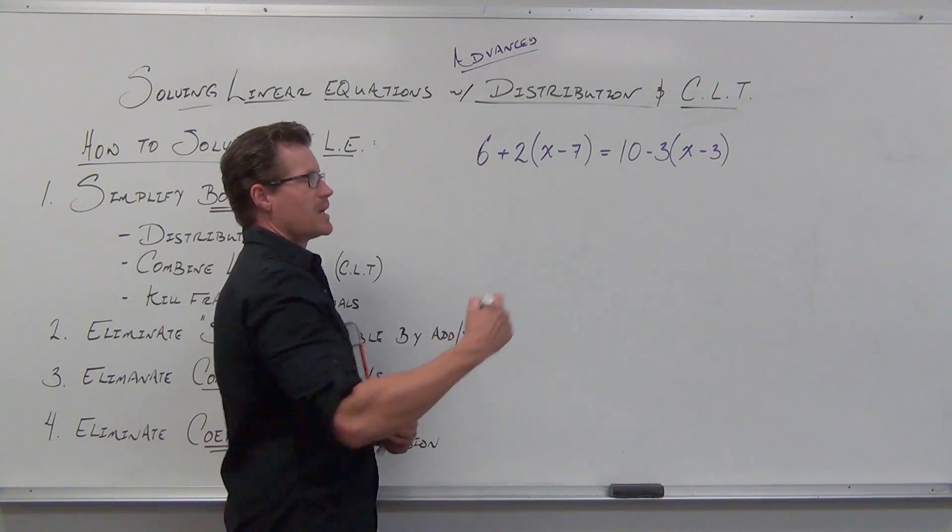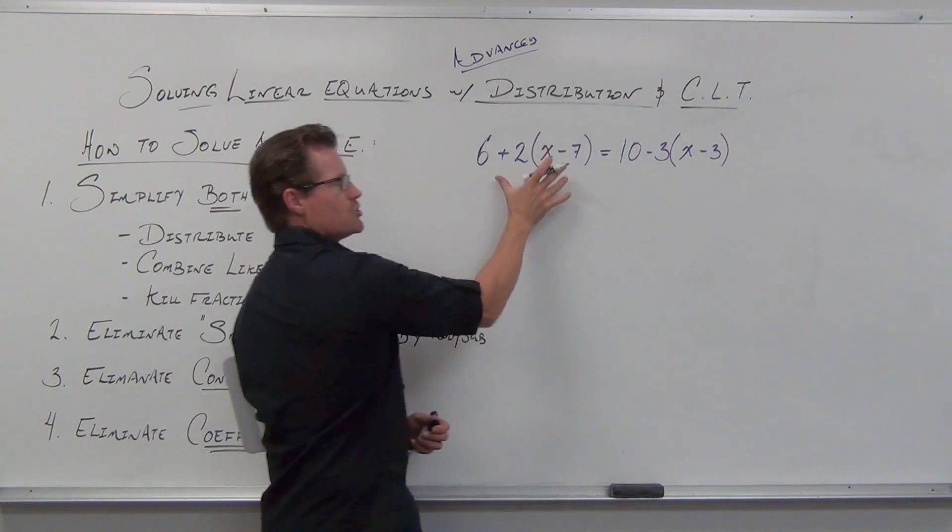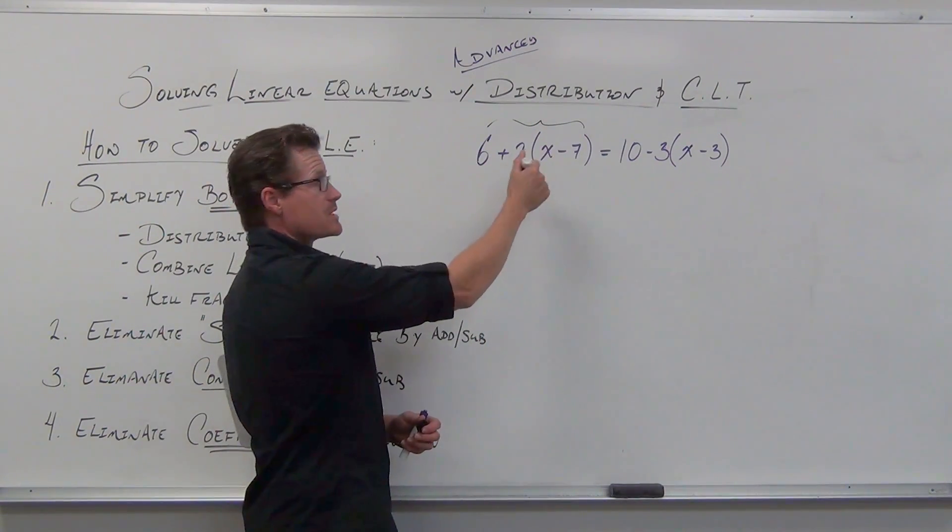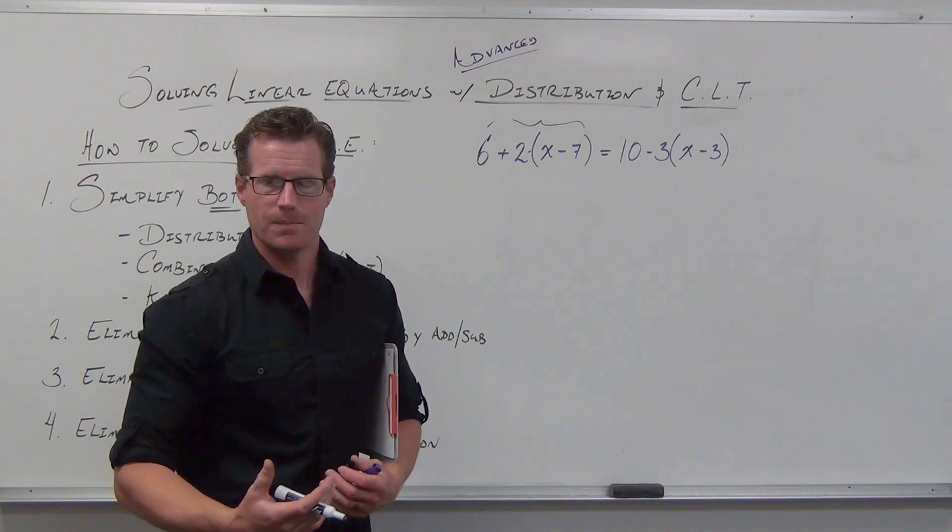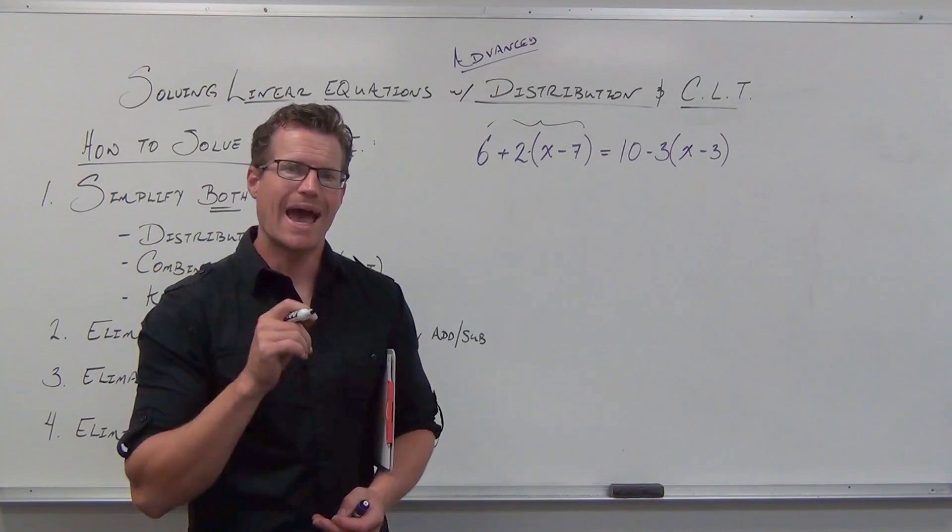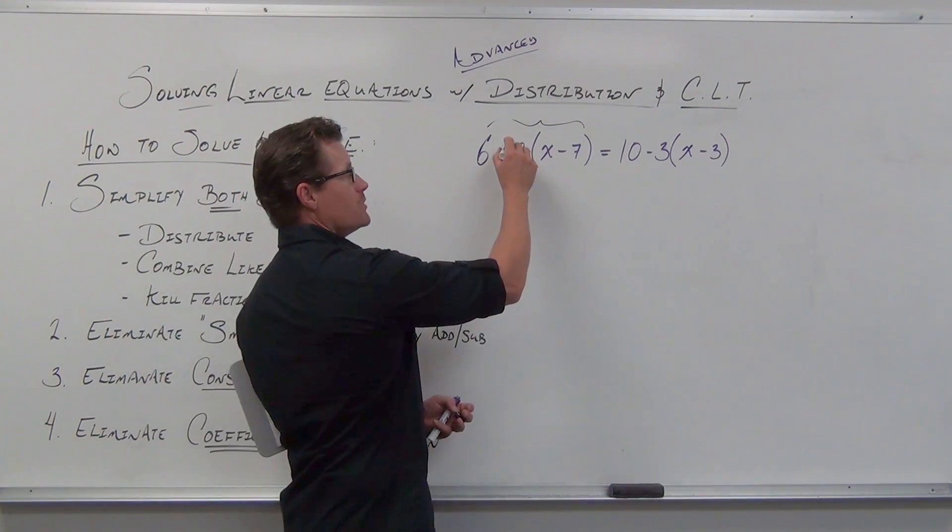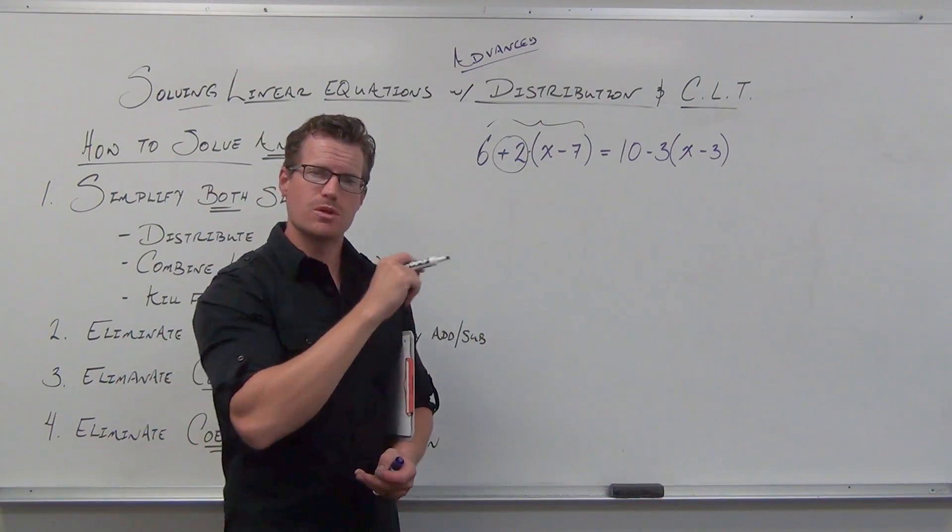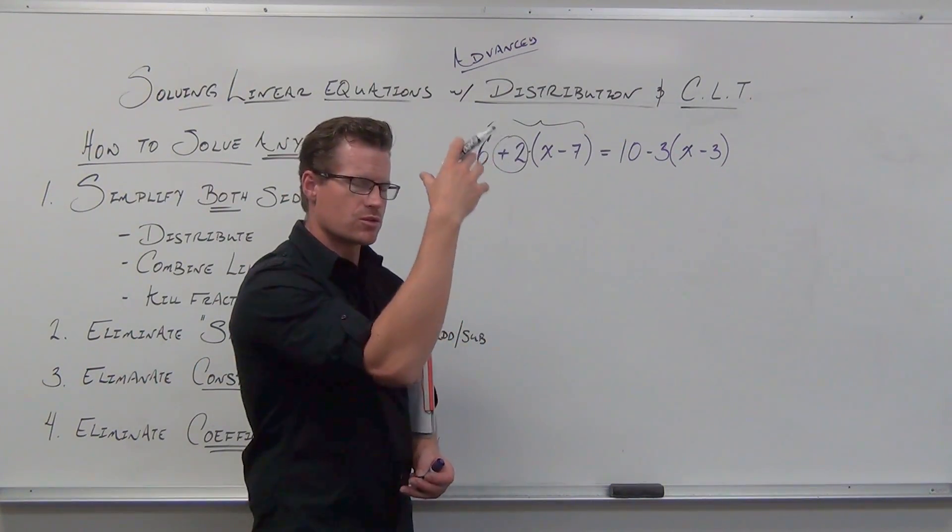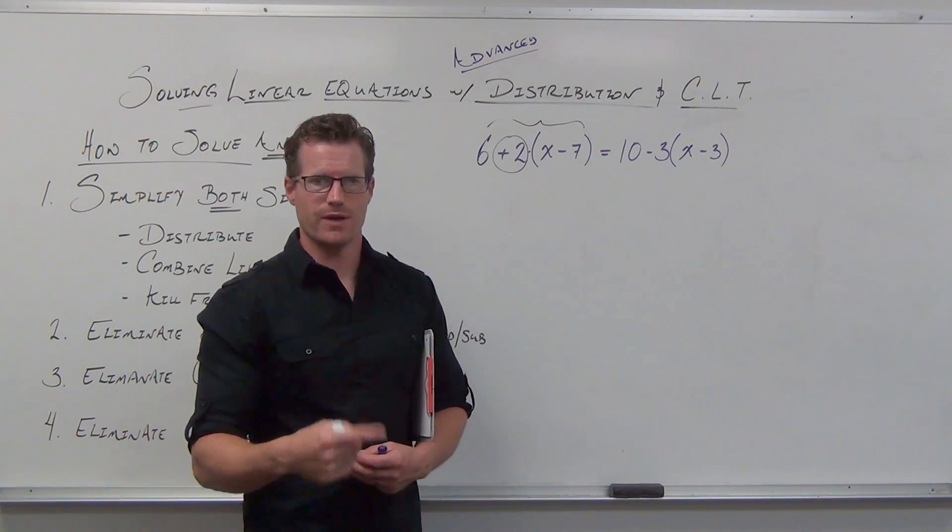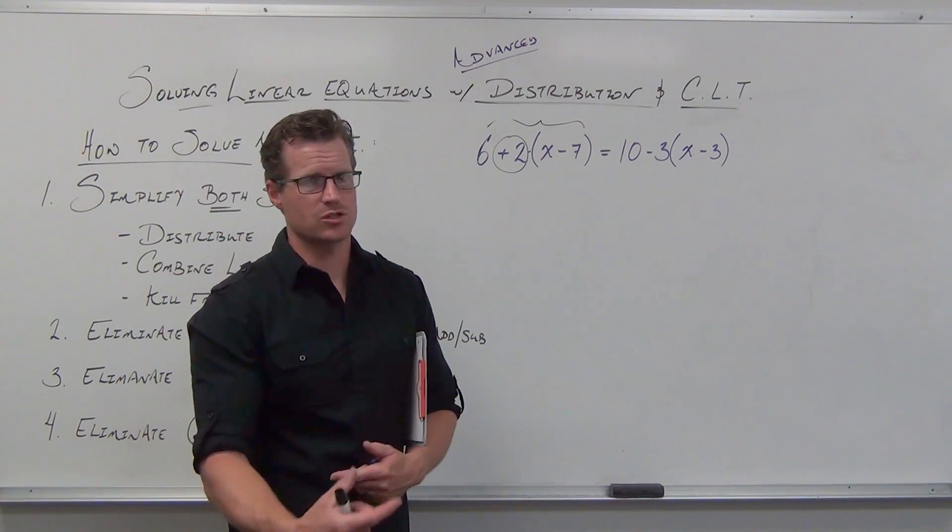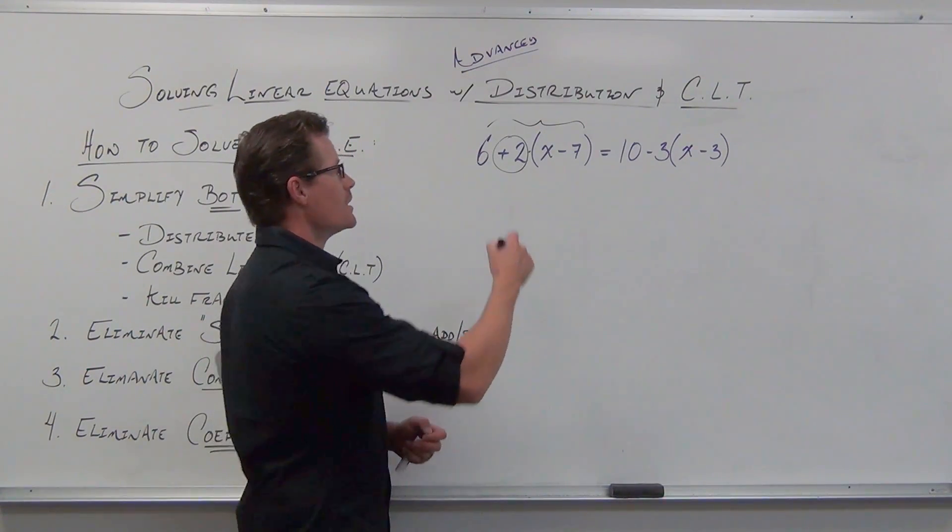When you have a number next to a parenthesis, you always have a multiplication. Multiplication beats addition-subtraction every time in order of operations. We have to multiply first. The only way to do it is to distribute that number with its sign to everything inside the parenthesis. If you're getting the wrong answer a lot, watch this first. Don't be adding before distribution. That's a bad deal outside the parenthesis.